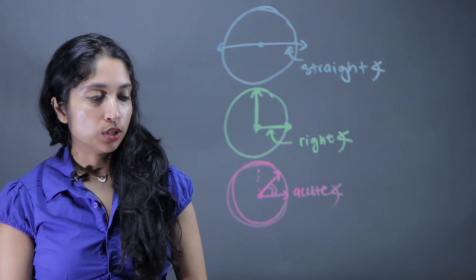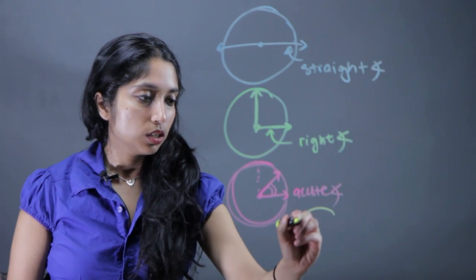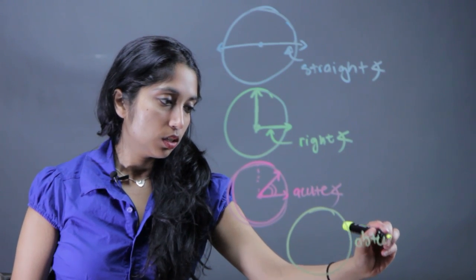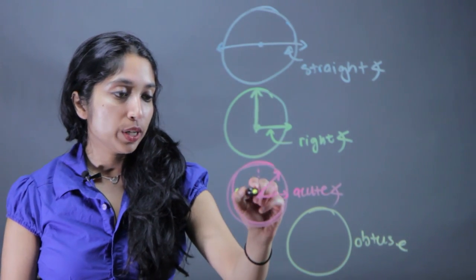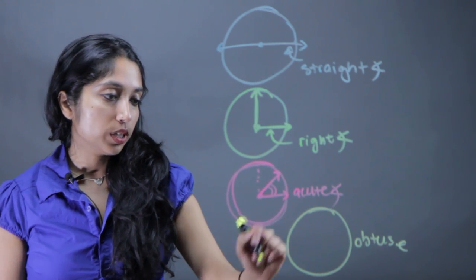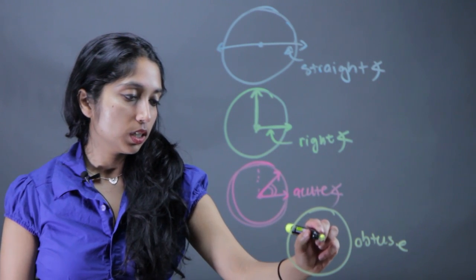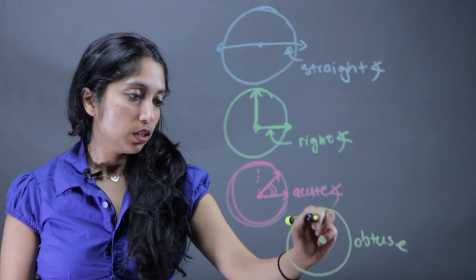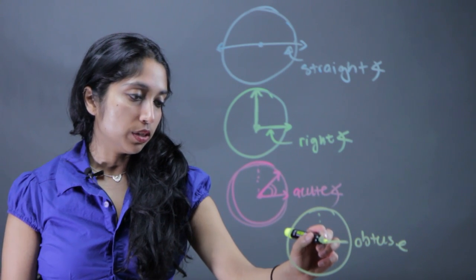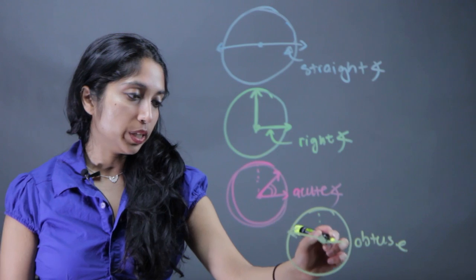The last one we're going to do is an obtuse angle. And that's anything bigger than that 90, but less than that straight angle. So we don't want it to go all the way around. Here's where 90 is. So anything bigger than this, for example, would be an obtuse angle.